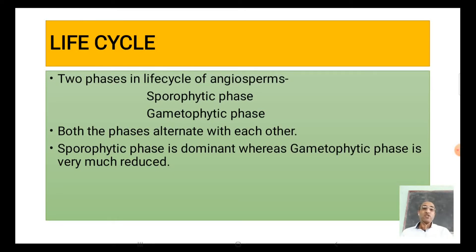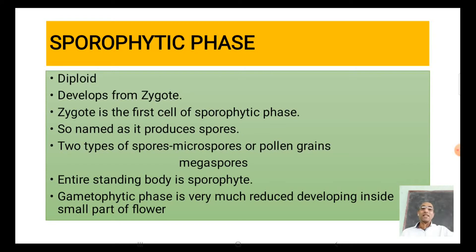This is true for angiospermic plants. When we consider lower plants, the gametophytic phase is dominant. In lower plants the gametophytic phase is dominant, whereas in angiospermic plants — which are considered higher plants — the gametophytic phase is very much reduced and the sporophytic phase is much more dominant. The sporophytic phase is always diploid; it develops from the zygote, so the zygote is the first cell of the sporophytic phase.